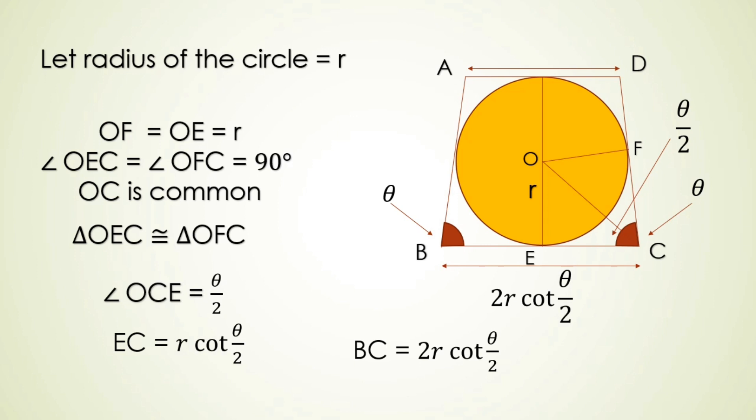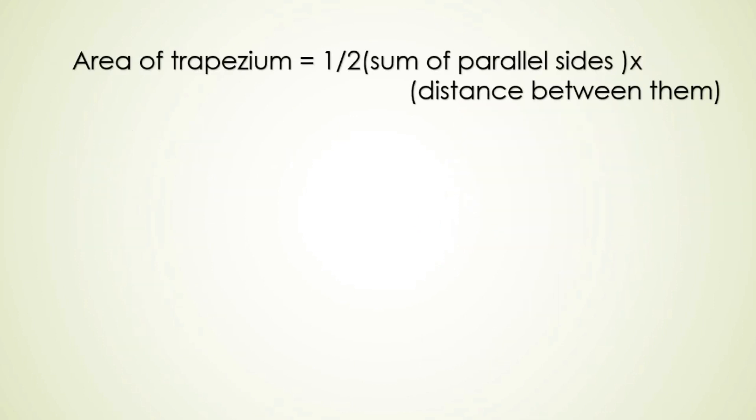Now applying the formula for area of trapezium we get area of trapezium is equal to 1 upon 2 times sum of parallel sides multiplied by distance between them.